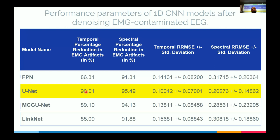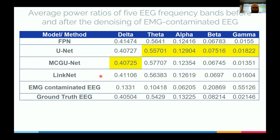Previously, people tried to build dynamic signal processing models for specific artifact types. But in this work — although I'm showing only EMG — our submitted paper includes EMG, ECG, and EOG all present in one dataset, and the model can remove all artifact types independently. We feel there is great potential for deep learning in artifact removal across any domain signal, including biosignals or seismographic signals.